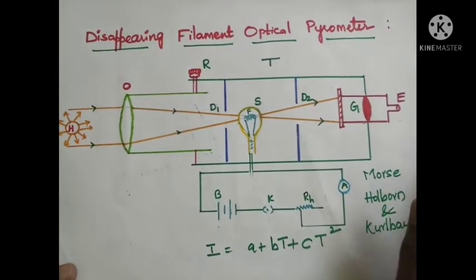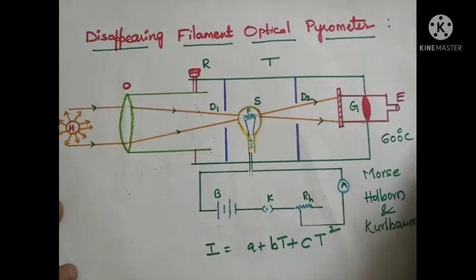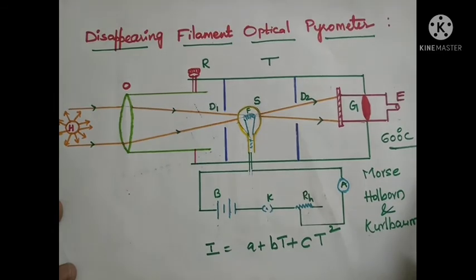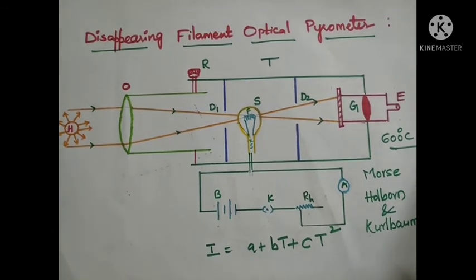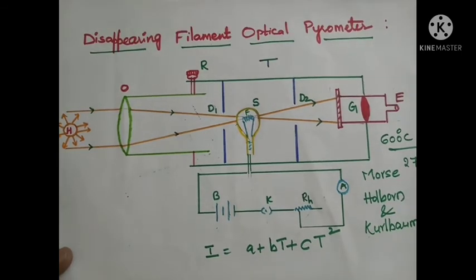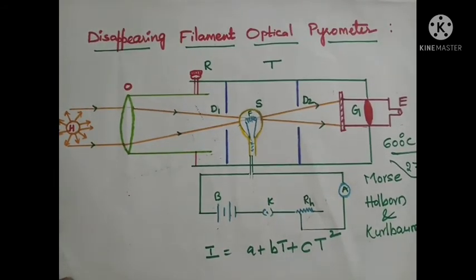With the help of this instrument, we can measure temperatures from 600°C to 1500°C. The range can be raised up to 2700°C by using an additional external device — a rotating sector — which cuts down a known fraction of radiation.